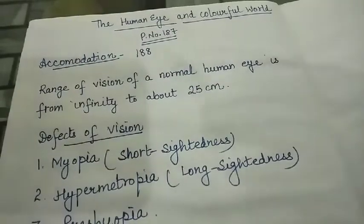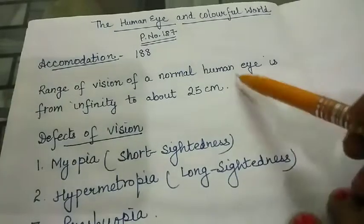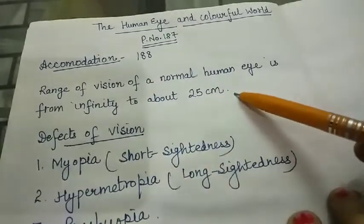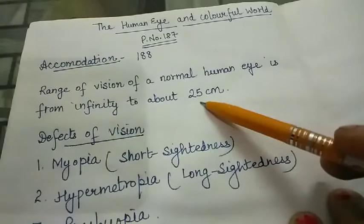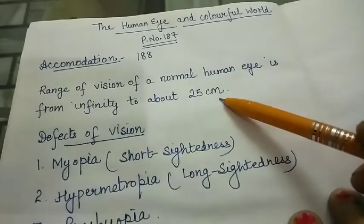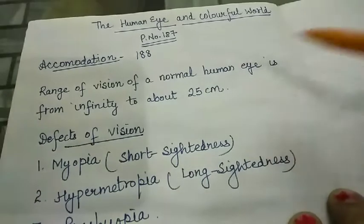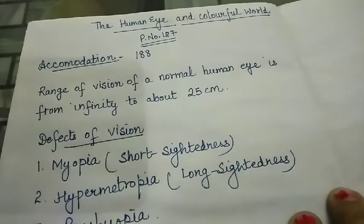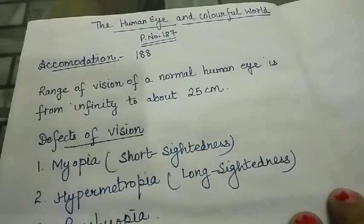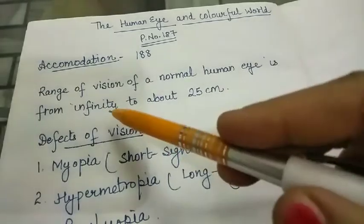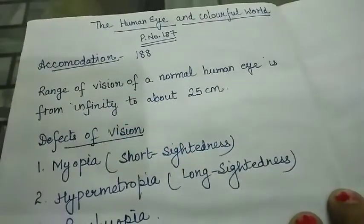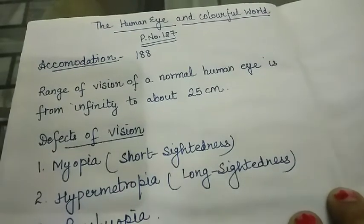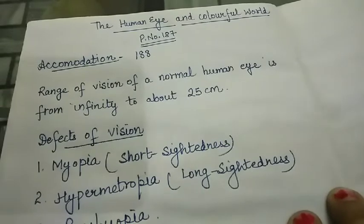Next topic is the range of vision of a normal human eye, which is from infinity to about 25 centimeters. Here, 25 centimeters is the nearest point of the eye up to which an eye can see objects clearly without any strain — this is also known as the near point of the eye. Infinity is the farthest point from the eye at which an object can be seen clearly, and this is known as the far point of the eye.